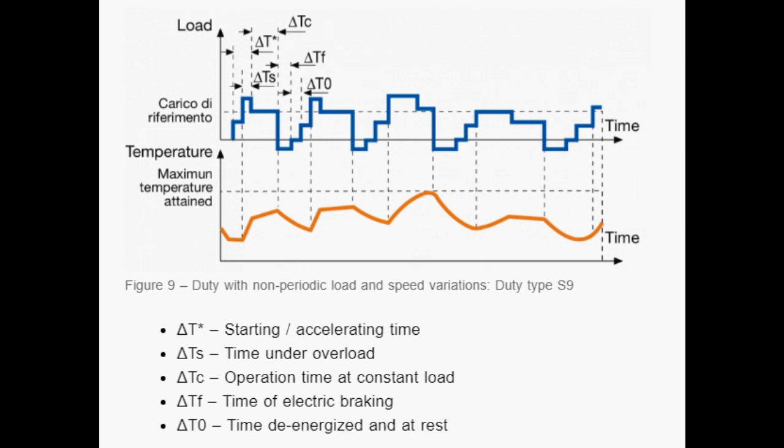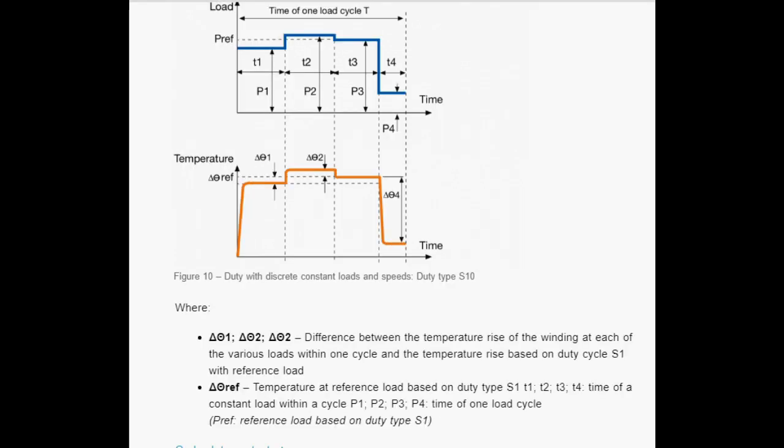S9 is defined as a duty in which generally load and speed vary non-periodically within the permissible operating range. S10 is defined as operation characterized by a specific number of discrete values of load and maintained for sufficient time to allow the machine to reach thermal equilibrium.